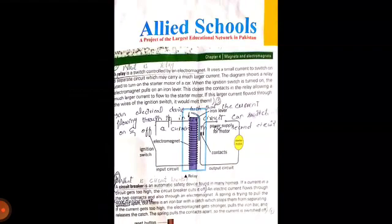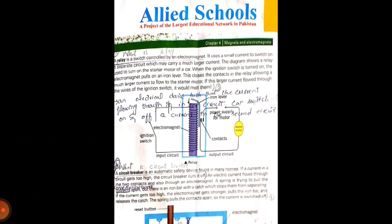The diagram shows this system. In a car starter motor, the relay system is used. When the ignition switch is turned on, the electromagnet pulls on an iron lever.